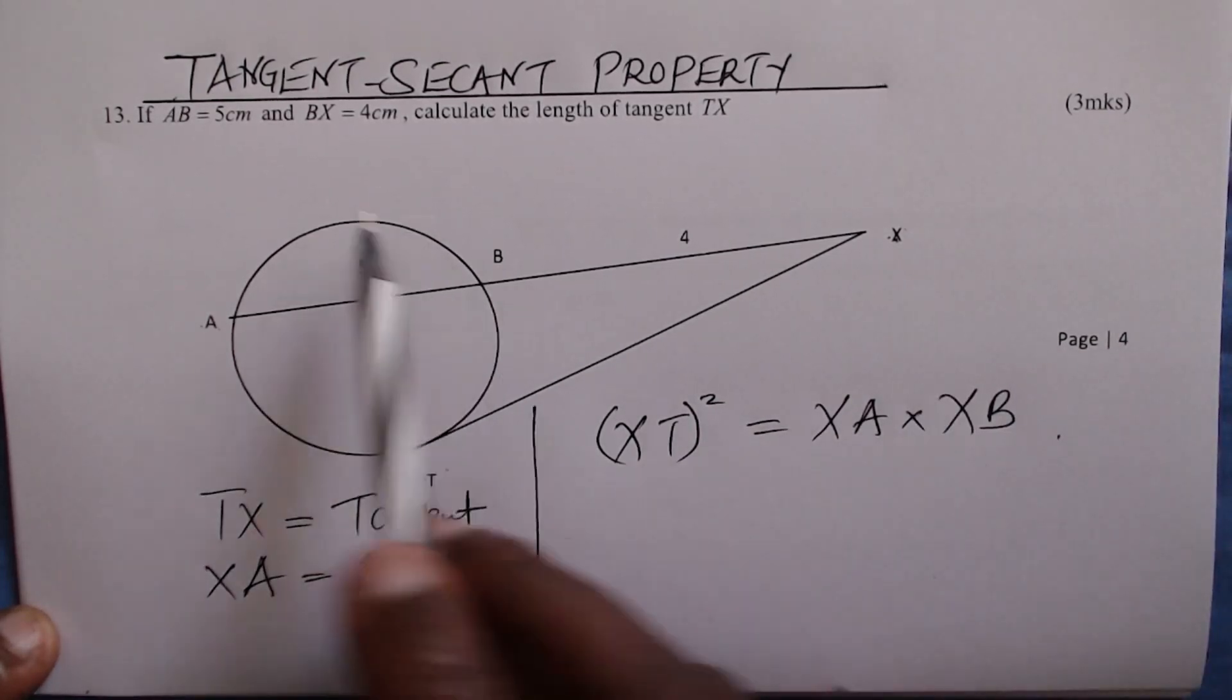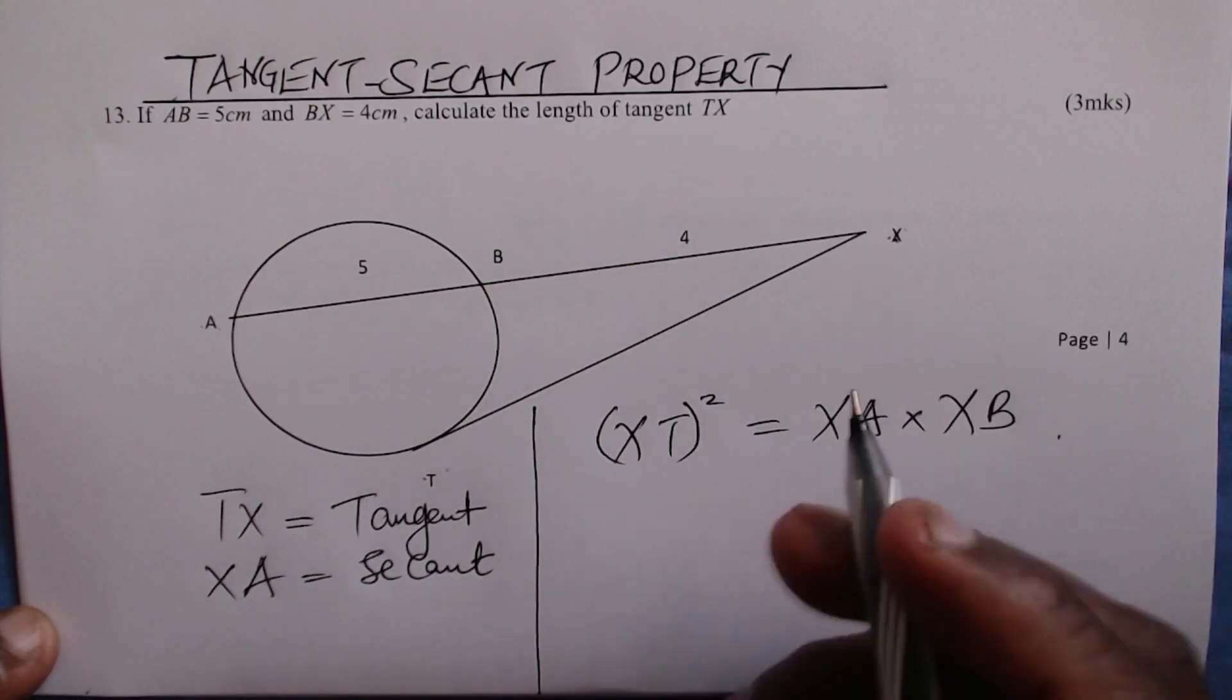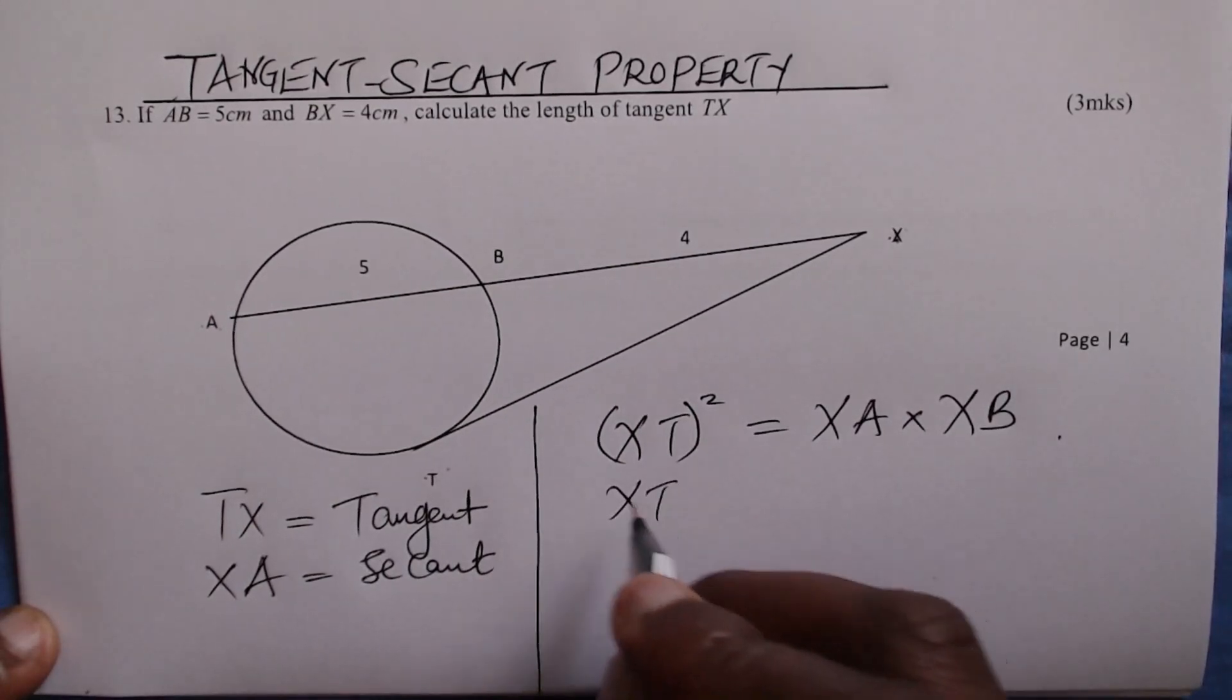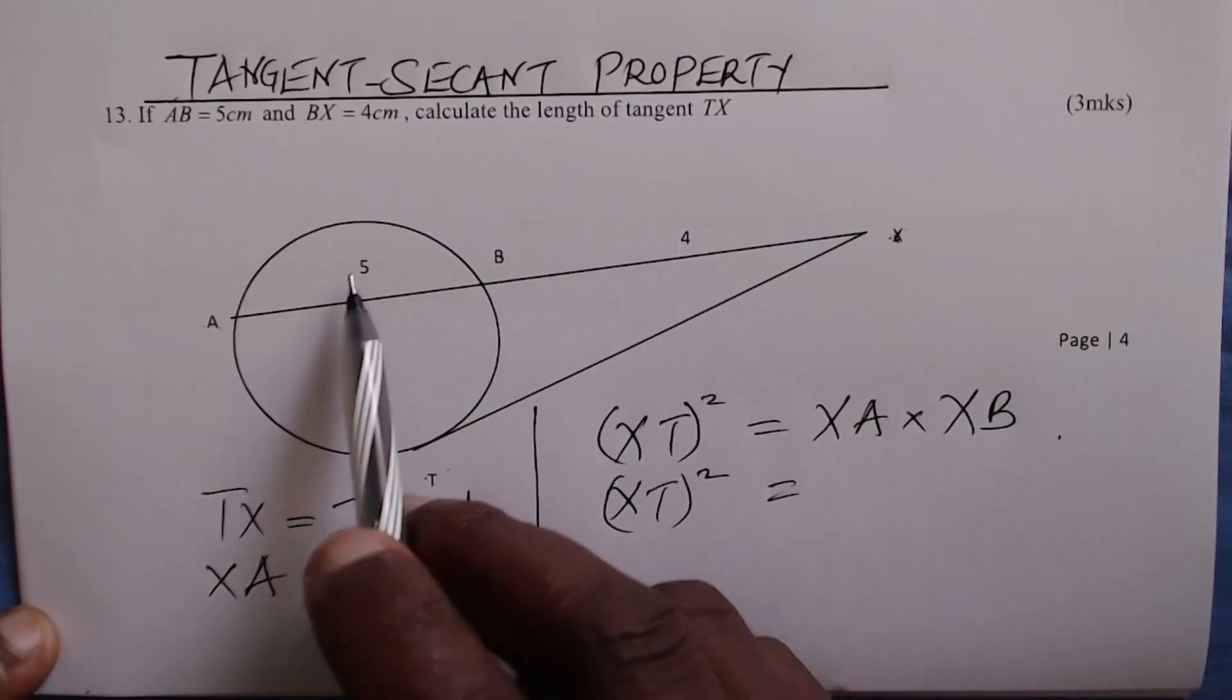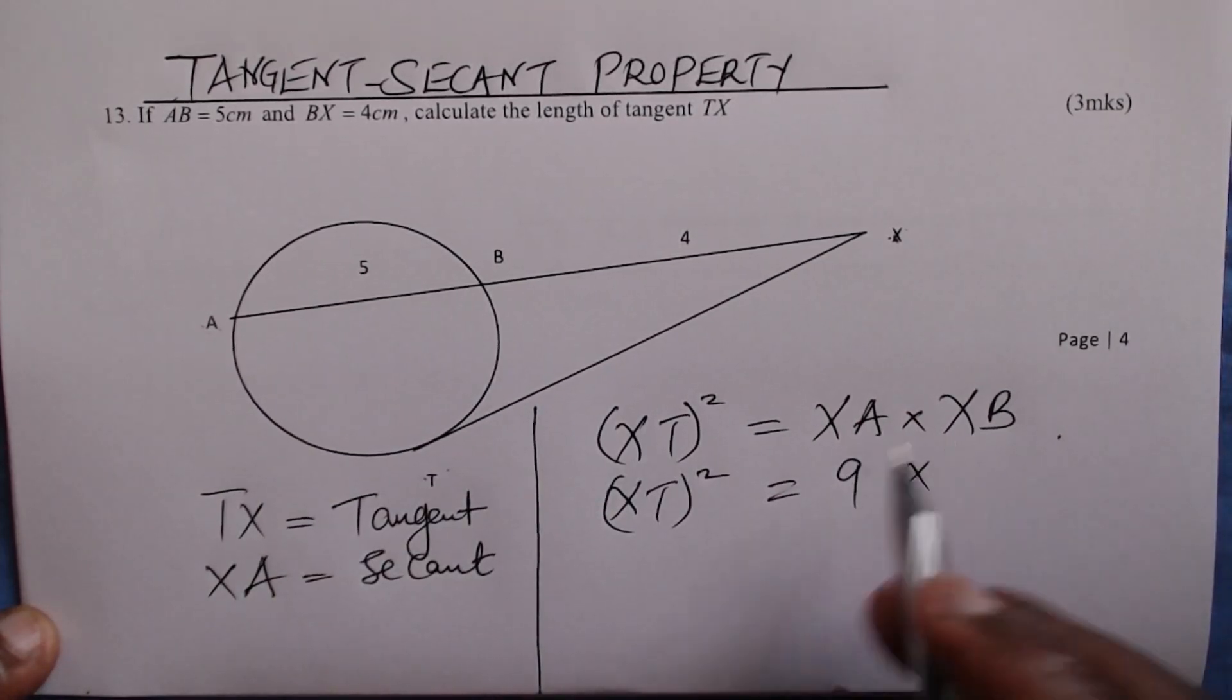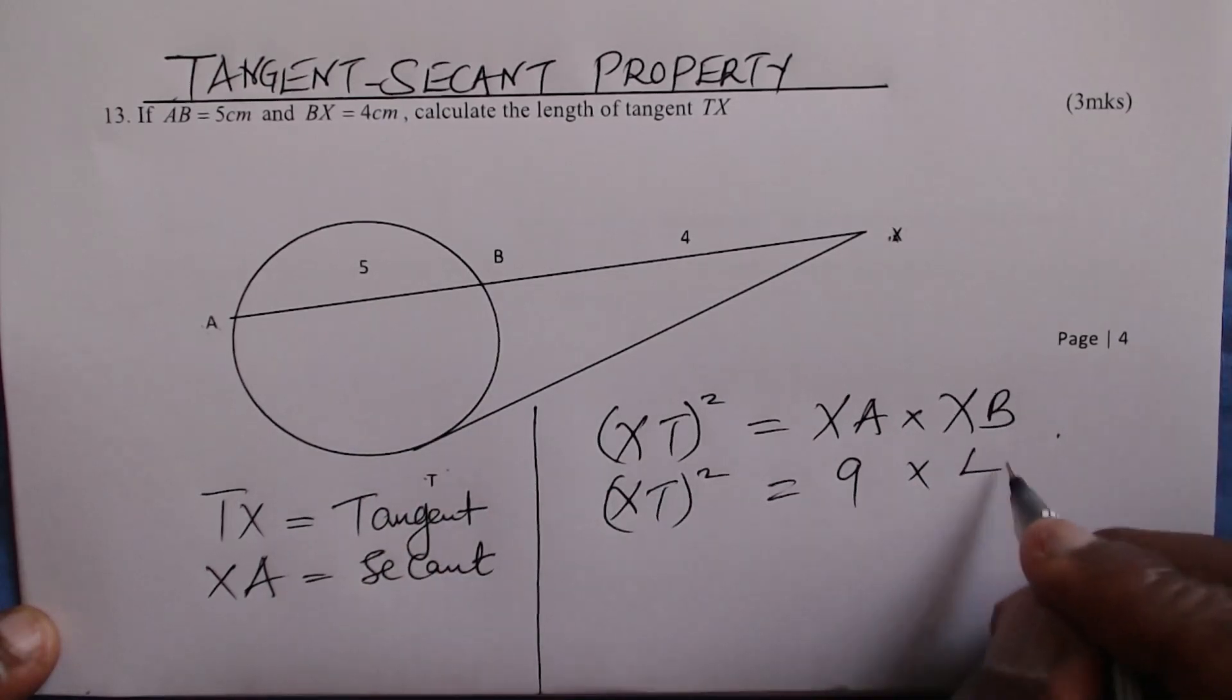So that is the tangent-secant property in a circle. XT squared equals XA, which is 4 plus 5, equals 9, multiplied by XB, which is 4.